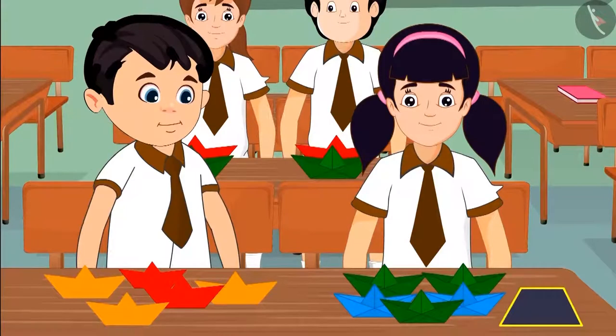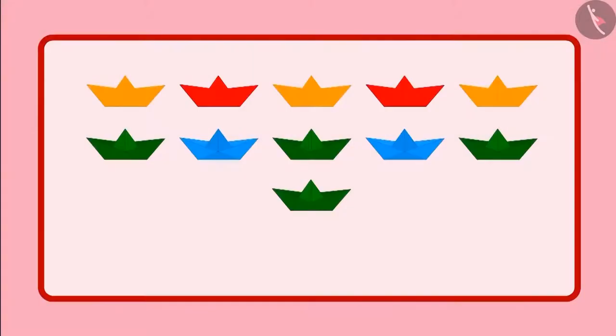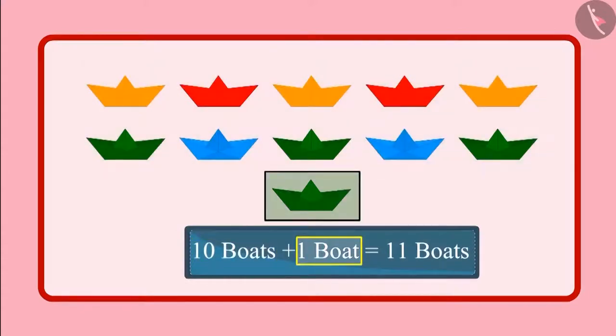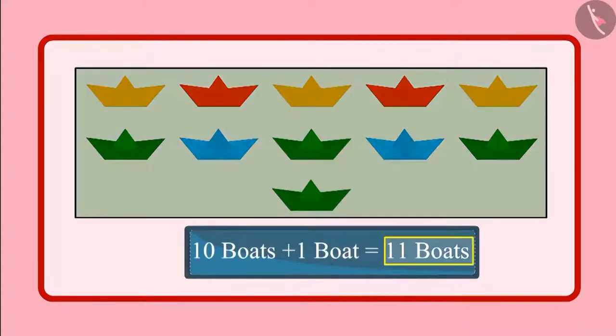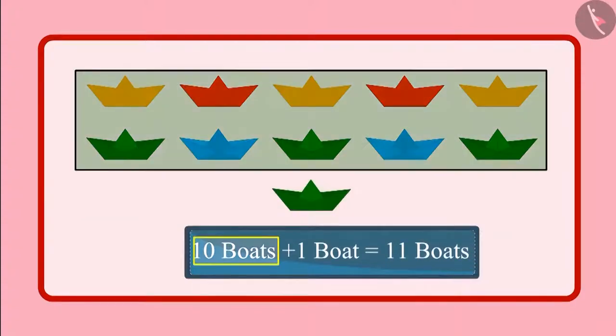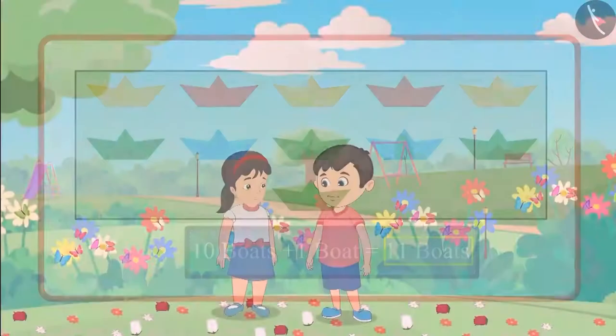Aarti had another paper left and she made another boat with it. So children, can you tell me how many boats do Chotu and Aarti have now? Let us see. 10 boats along with another boat. So there are a total of 11 boats. So children, did you see? When we have 10 boats and add another one, then we get a total of 11 boats.